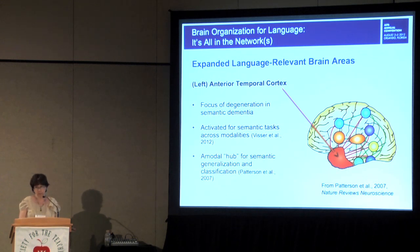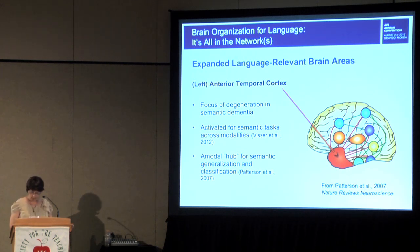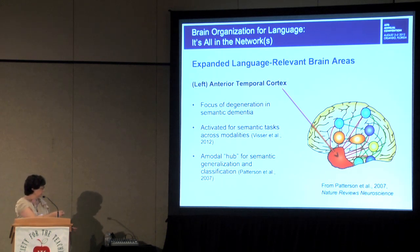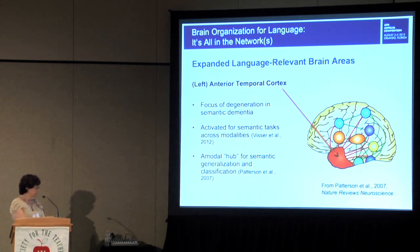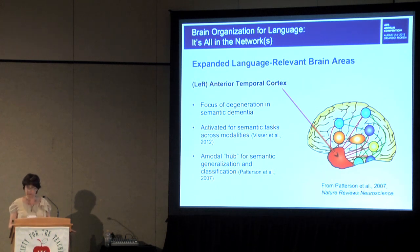It's generally accepted that concepts are represented in our brain in a distributed way throughout the cortex. For a concept like 'dog,' visual features would be stored in visual association cortex, doggy-type actions in areas that mediate actions, and emotional features in limbic cortex. It's been proposed that the anterior temporal lobe area functions as a hub to link together all of these diverse features for various concepts, enabling semantic generalizations and classifications.